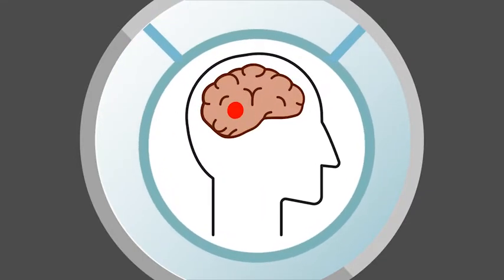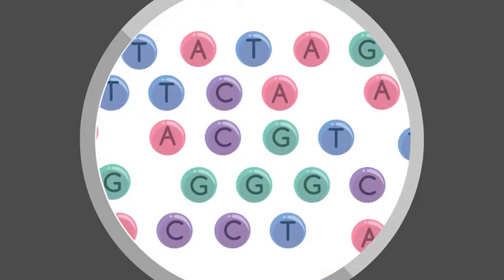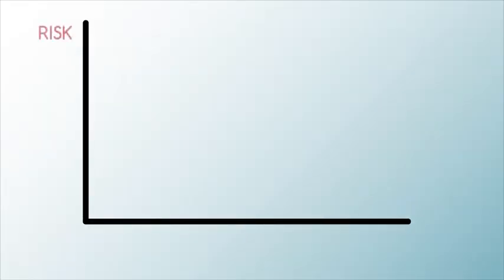Genome sequencing allows scientists to observe what variants are present in your DNA sequence and compare it with past accumulated information. In this way, scientists can determine the risk that you might develop a specific disease.